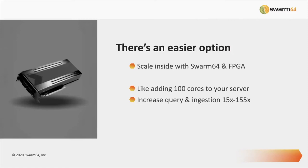What people are starting to realize is there's a much easier option to gain that parallelism, and that is by dropping an FPGA into your server. If you have your own data center, or even moving to a cloud instance like an Amazon F1 — which is FPGA-equipped — or Microsoft and others who are starting to introduce FPGA-equipped servers. Just knowing that by dropping an FPGA or moving to an FPGA-equipped server, it can be like adding a hundred cores to your server, giving you 15x to 155x acceleration of query and ingestion.